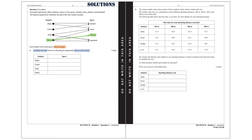To solve this question we are going to start with athletics because there is only one arrow going into athletics and that is from Marco. So athletics will be allocated to Marco. We can now erase the other two arrows going out from Marco, and we can see that basketball has only one arrow coming from one. So one will be allocated to basketball. By deleting the other arrow from one, we can see that tennis can be allocated only to Blake. And of course the last one is going to be football, which is going to be allocated to Carly.